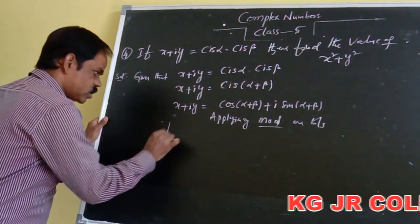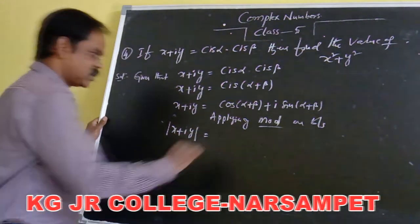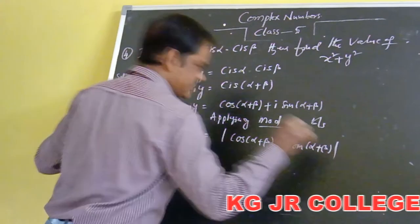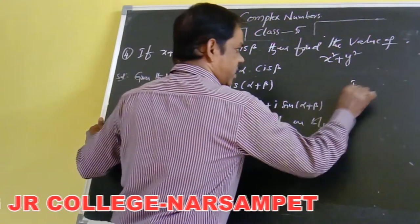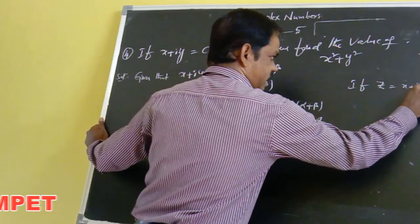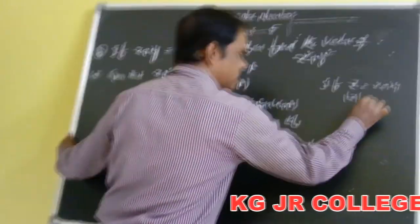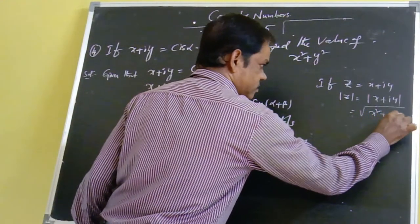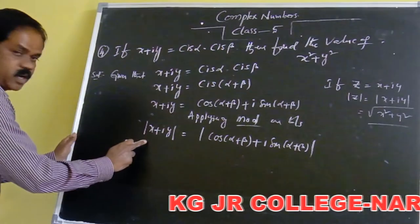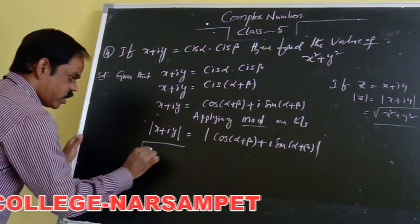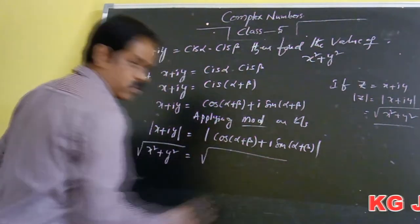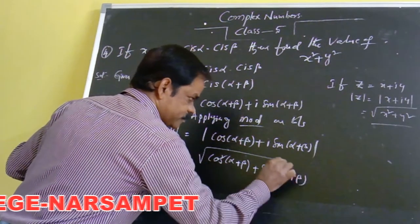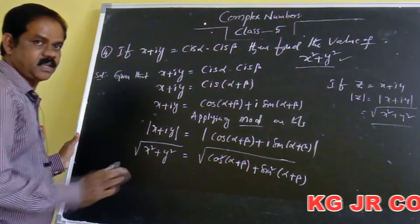The modulus of x plus iy is equal to the modulus of cos of alpha plus beta plus i into sin of alpha plus beta. By the basic concept, if Z equals x plus iy, then the modulus of Z is the square root of x squared plus y squared. Therefore the modulus of x plus iy equals square root of x squared plus y squared, which equals square root of cos squared of alpha plus beta plus sin squared of alpha plus beta.